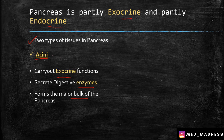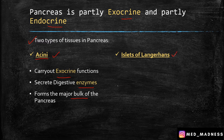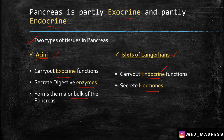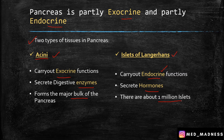The majority of the cells is acini and it secretes digestive enzymes carrying out the exocrine functions. And the islets of Langerhans is the second type of tissue present in the pancreas, mainly carrying out the endocrine functions. It secretes hormones and there are about 1 million islets in the pancreas. So, acini for digestive enzymes and islets for hormones.